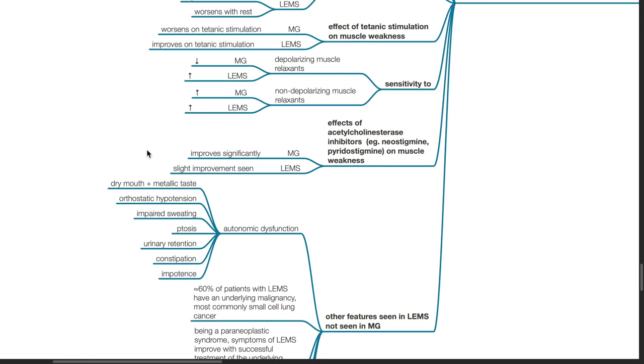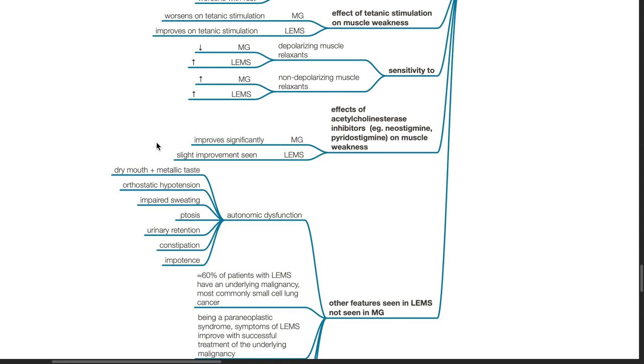Effects of acetylcholinesterase inhibitors such as neostigmine and pyridostigmine on muscle weakness. This drug significantly improves weakness in myasthenia gravis but only a slight improvement to no improvement is seen in LEMS.